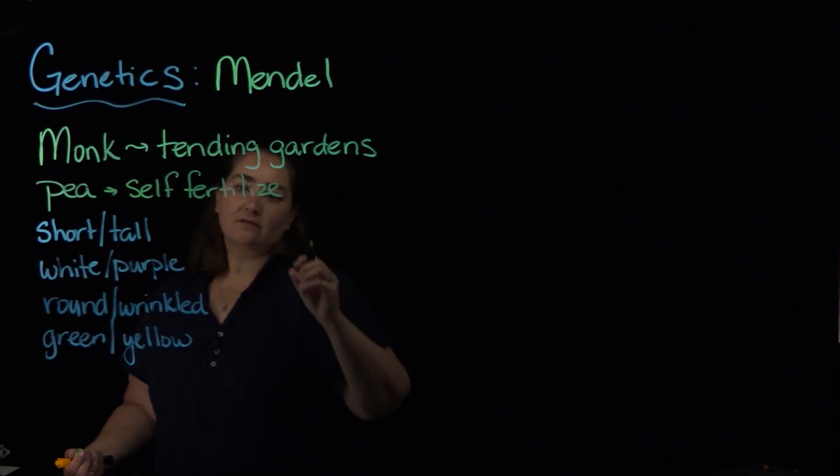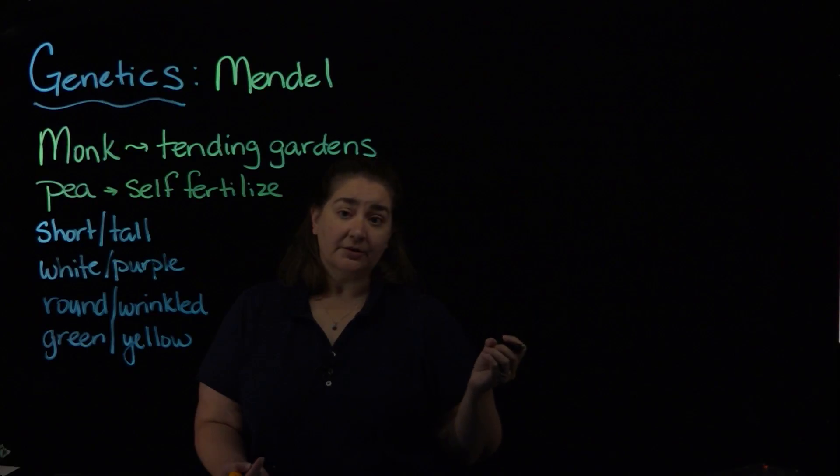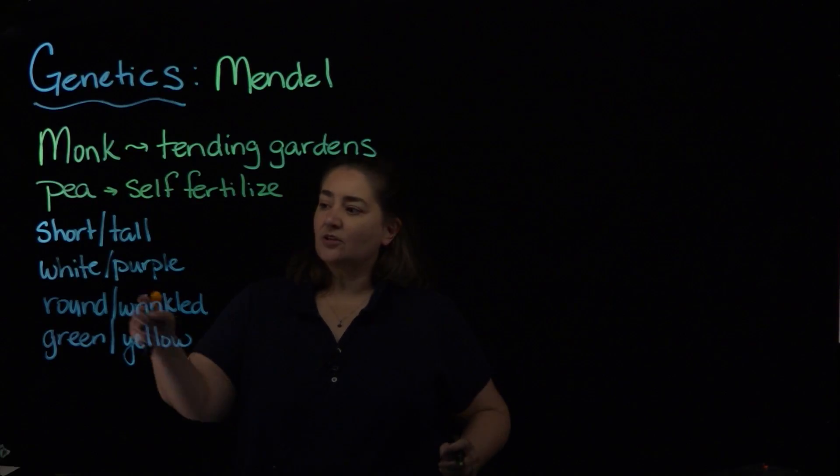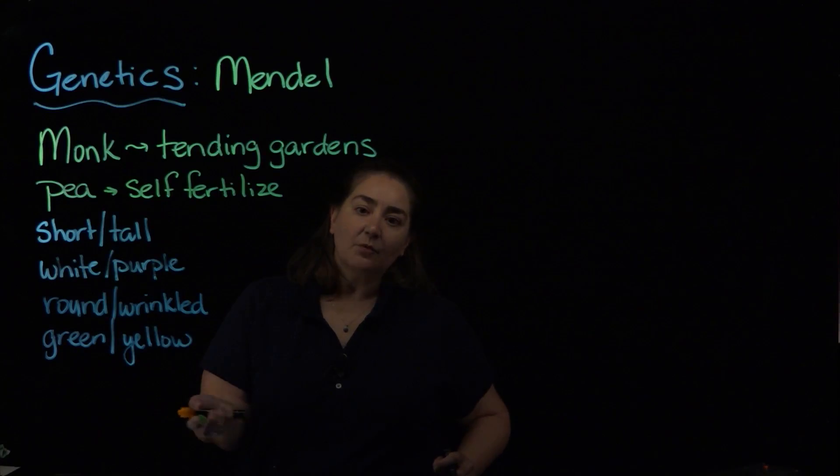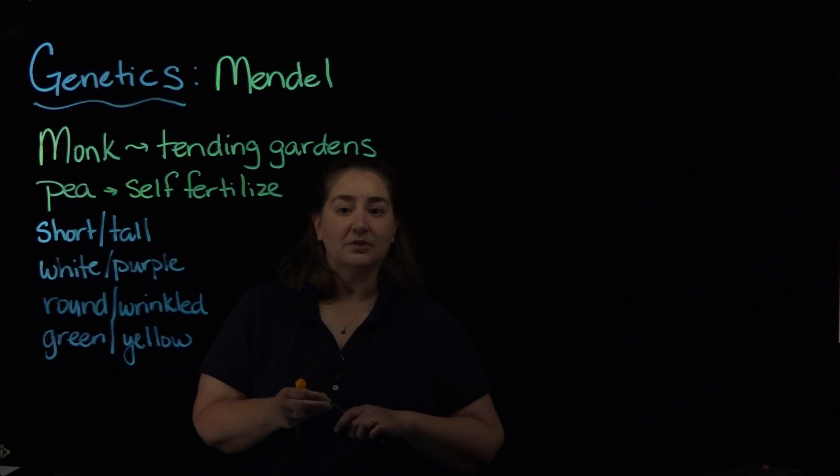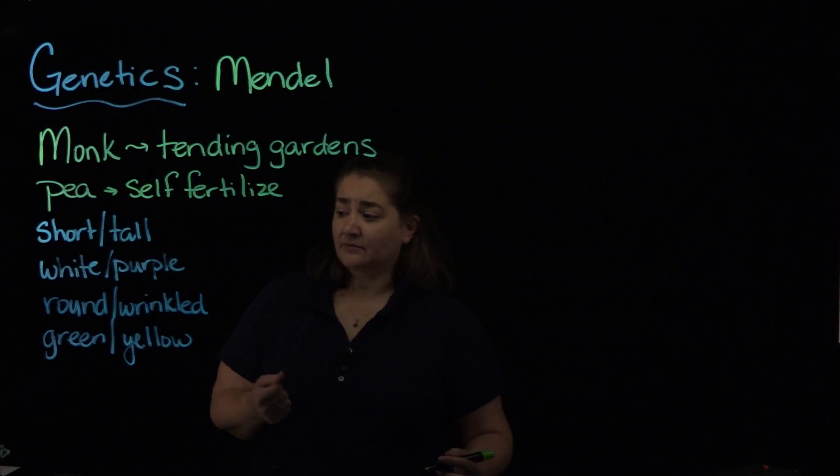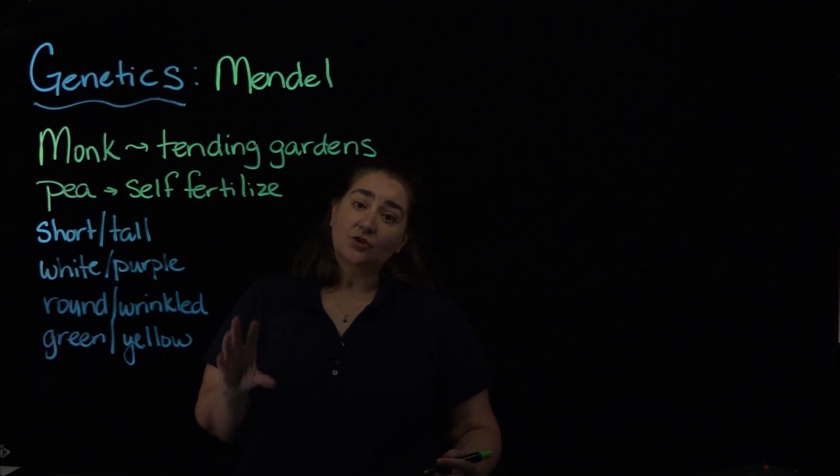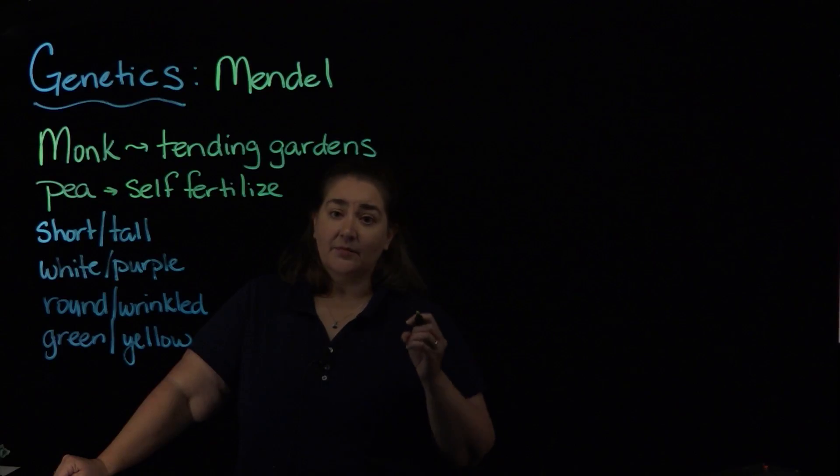So what Mendel did is he took steps to prevent the self-fertilization so that he could mix a plant that had purple flowers with a plant that had white flowers and he could observe the results and make some conclusions from that. And in doing those studies he literally set up hundreds and hundreds of genetic crosses.